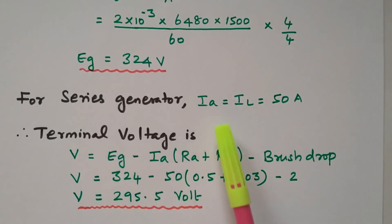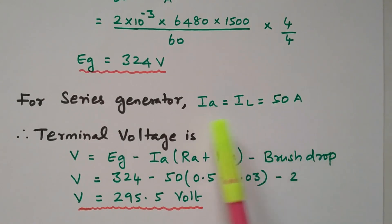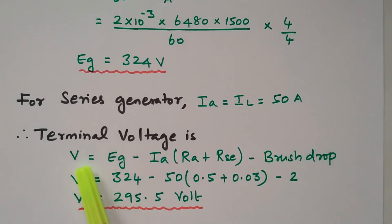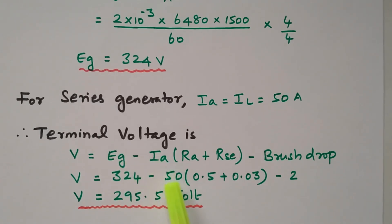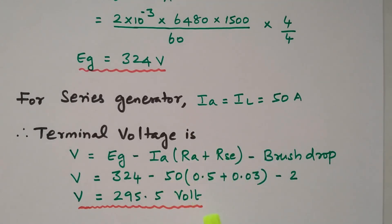For the series generator, Ia = IL = 50 amperes. Substituting into V = EG − Ia(RA + RSC) − brush drop: V = 324 − 50 × (0.5 + 0.03) − 2 = 324 − 26.5 − 2 = 295.5 volts. The terminal voltage is 295.5 volts.